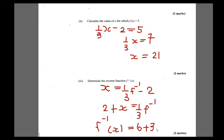So the inverse function is f⁻¹(x) = 6 + 3x. You can even check: f⁻¹(5) = 6 + 3(5) = 21. We know from before that f(21) = 5, so the inverse function is correct. That takes care of part three.